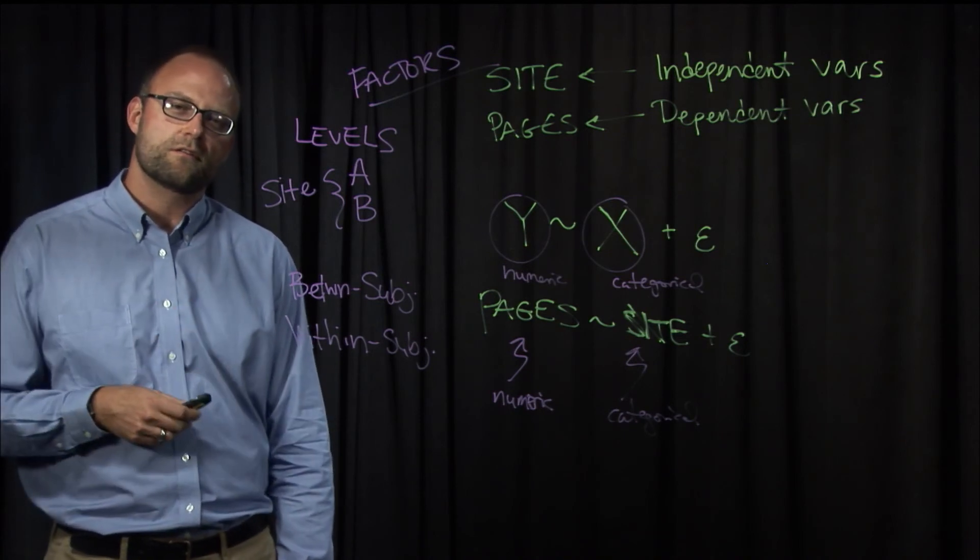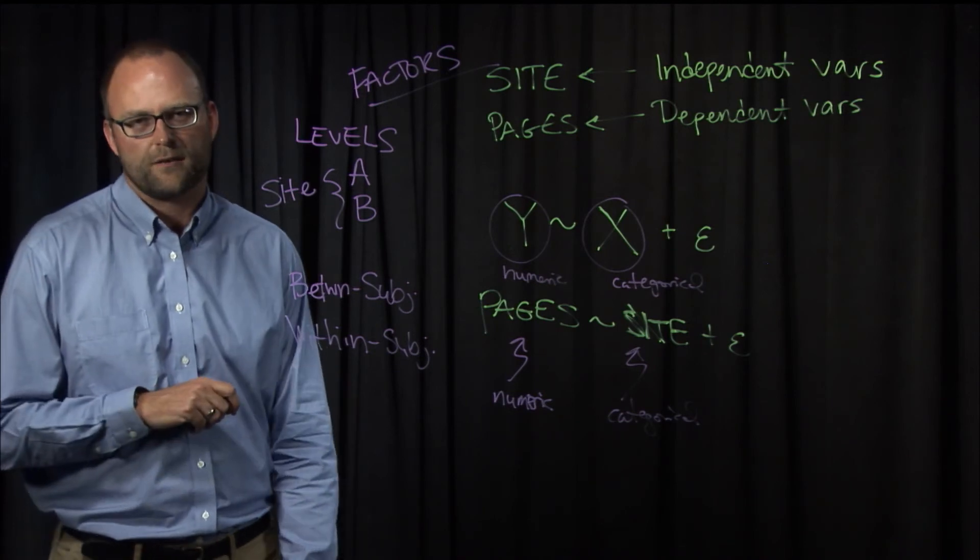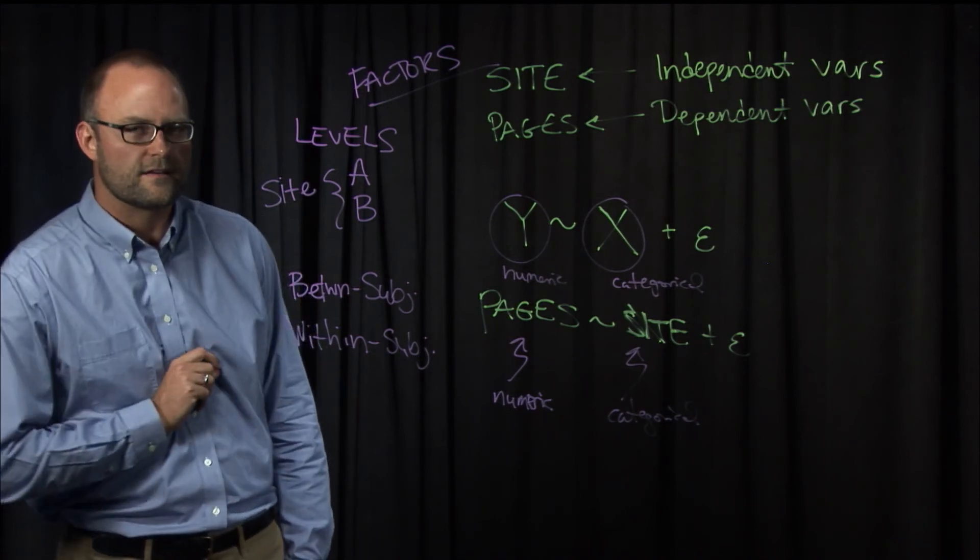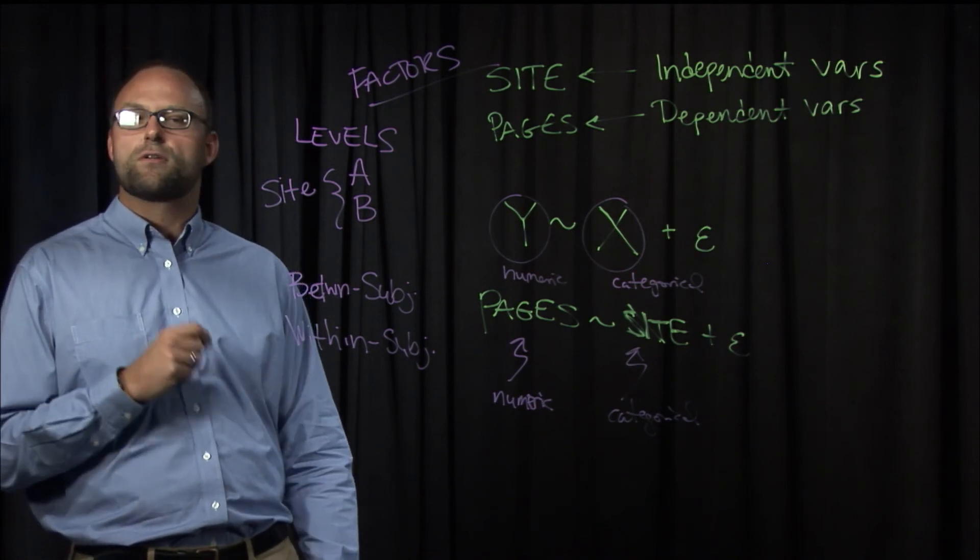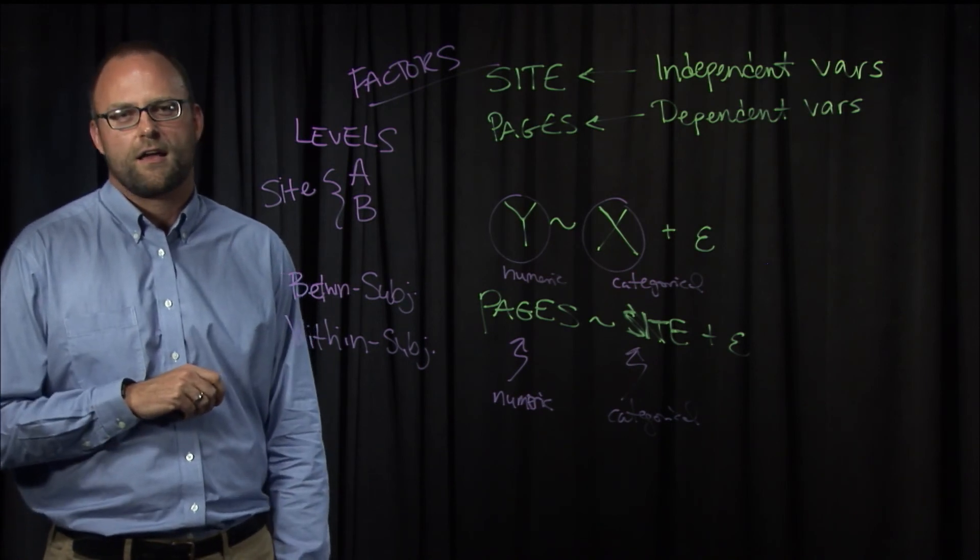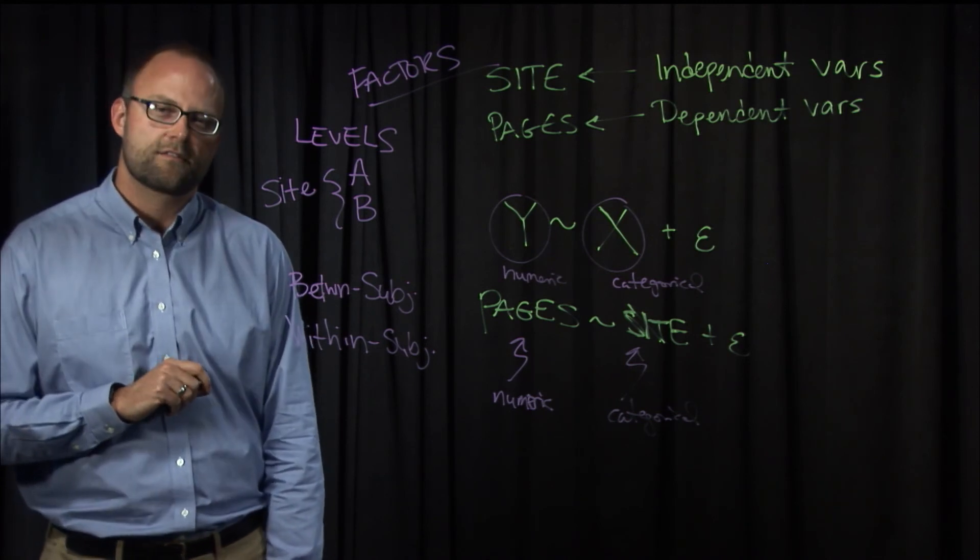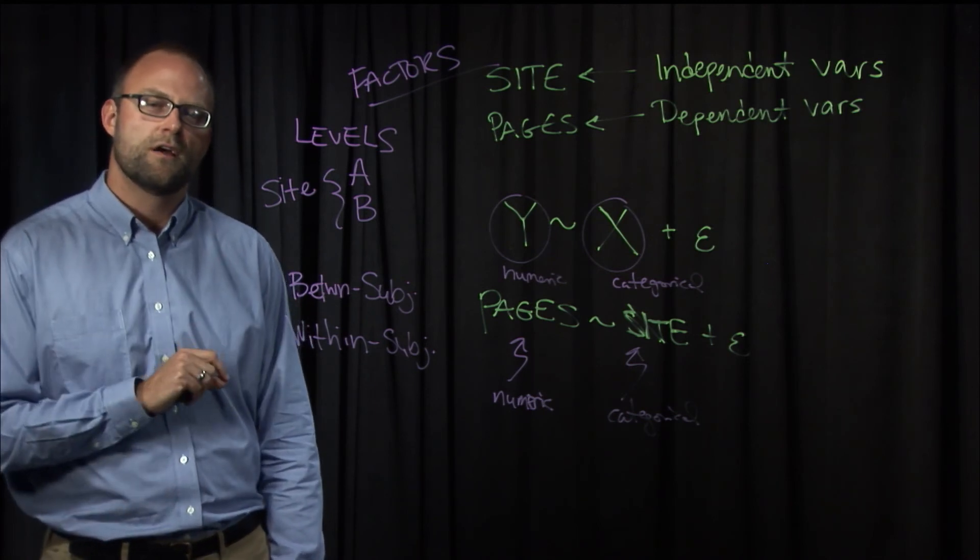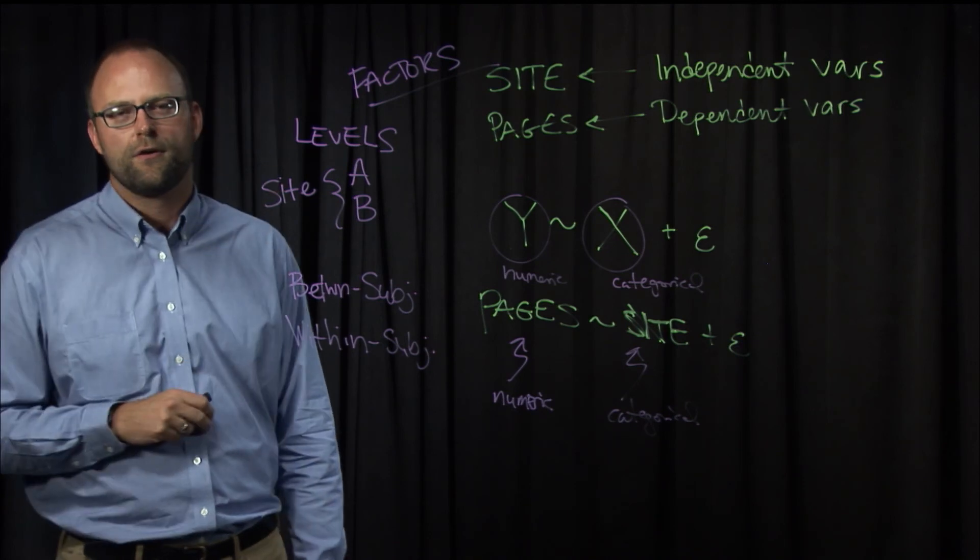For our purposes in this particular study, we will have near a 50-50 split, but it comes out not quite exactly 50-50, and that's okay. And we have a total of 500 visitors, and we do measure each visitor only once. So we have one measure per visitor, the number of distinct pages they viewed, either in website A or website B.